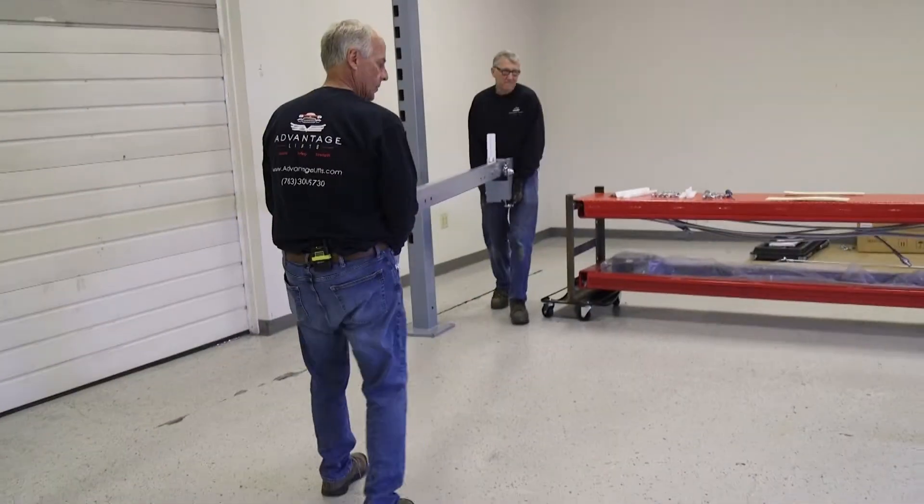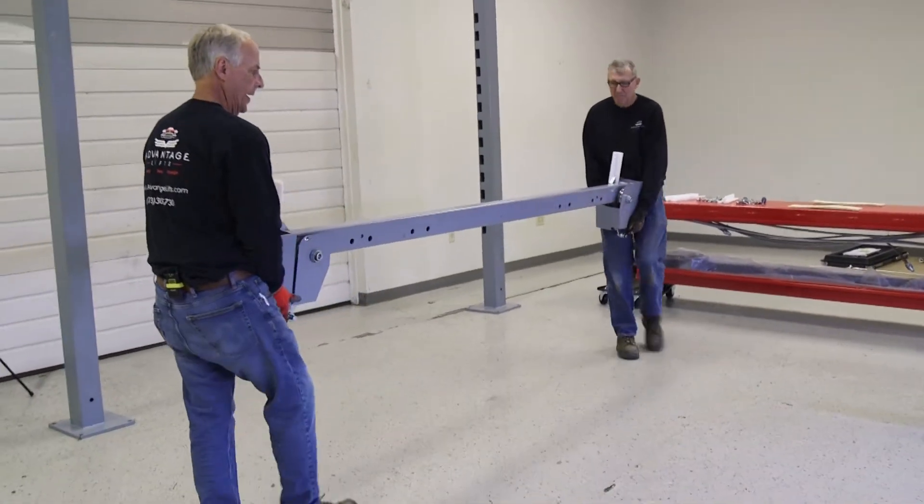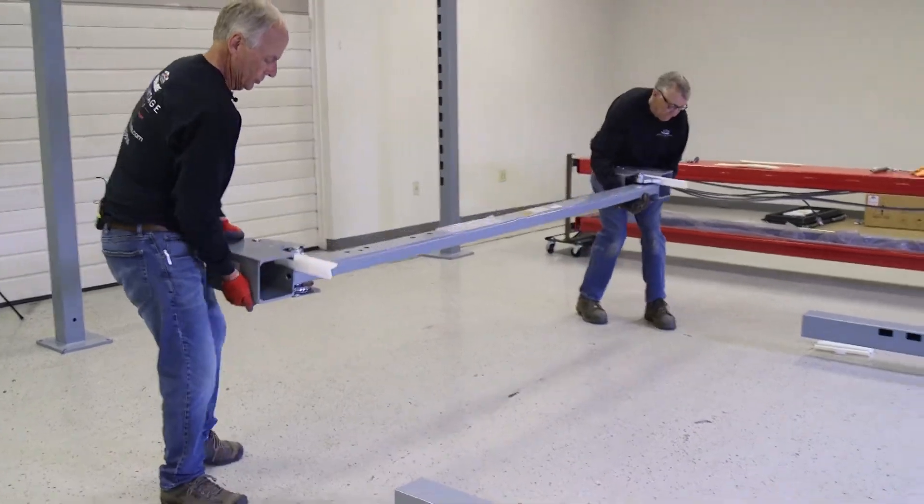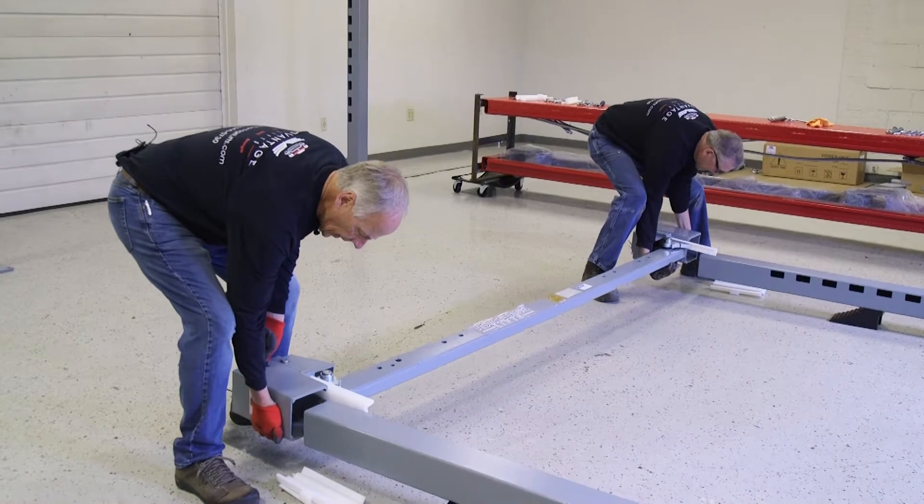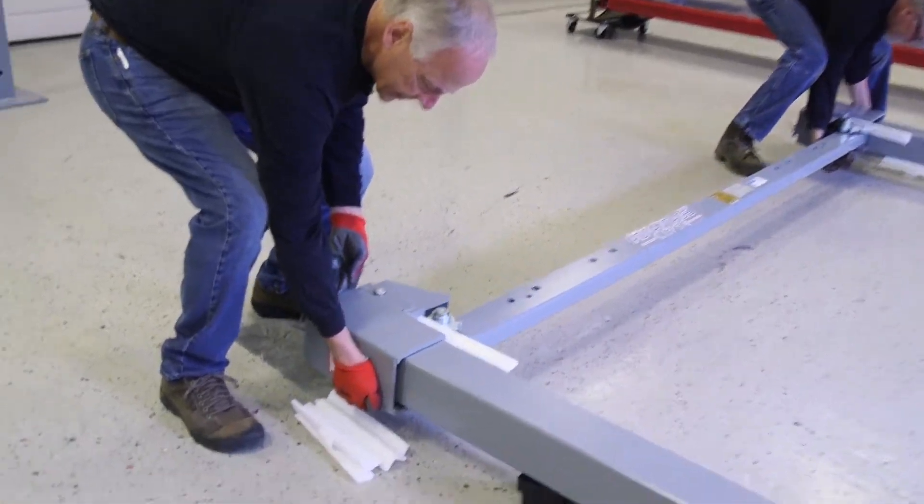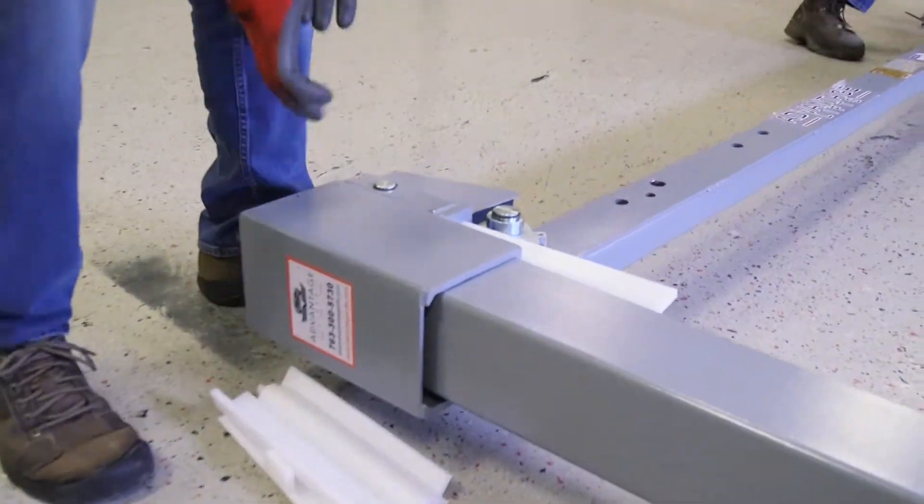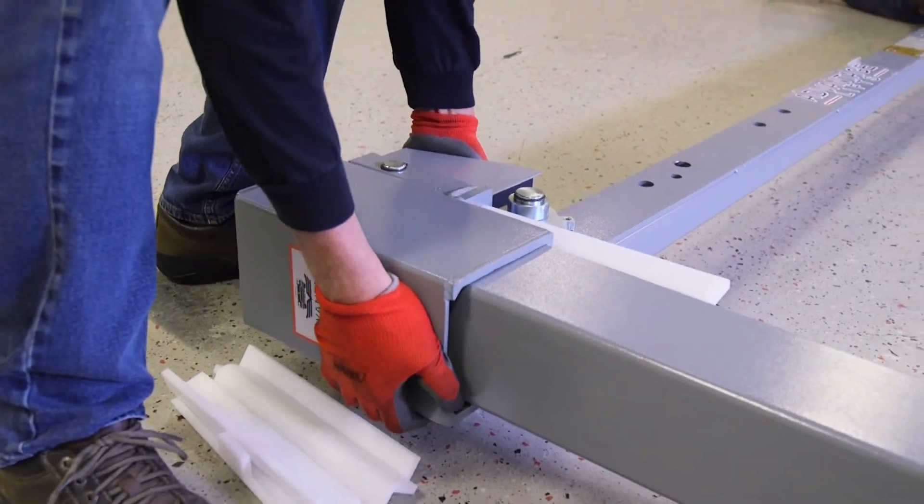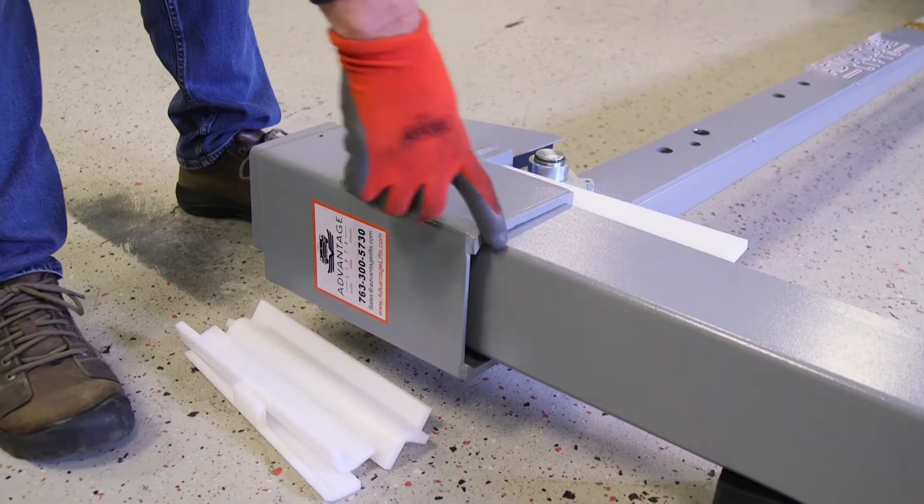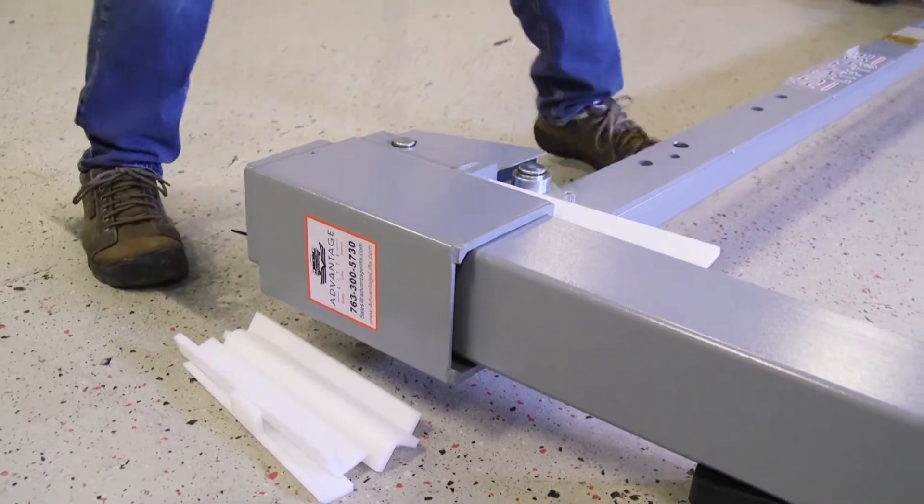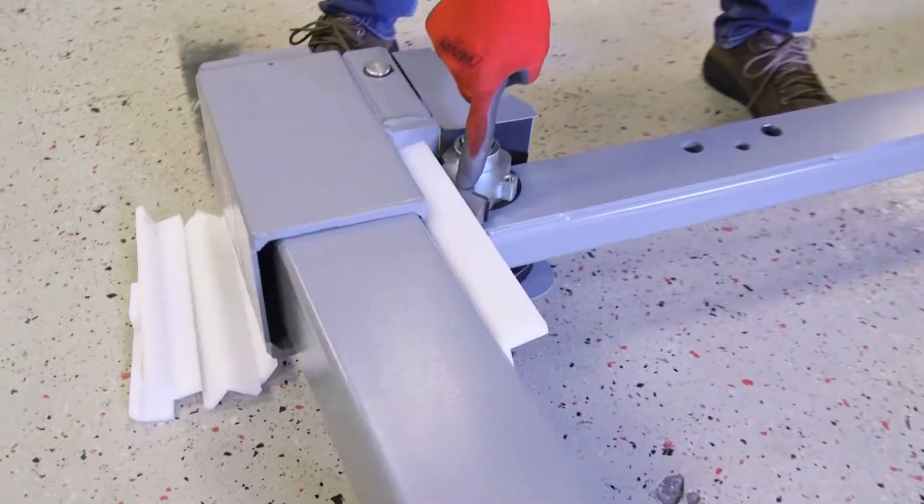So what we're doing now is we're going to bring over our cross arms and match them up to our post. As we did earlier, we aligned up our post, so it makes it really easy to slide this on. Now you want to be careful because we are at this time metal to metal. We don't want to be sliding and scratching up our surfaces. And the other thing you want to make sure, see our lock is on the top.